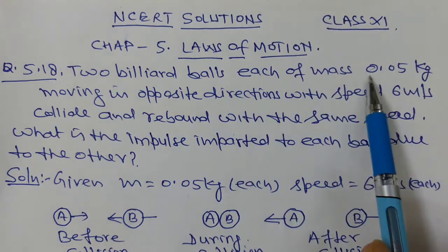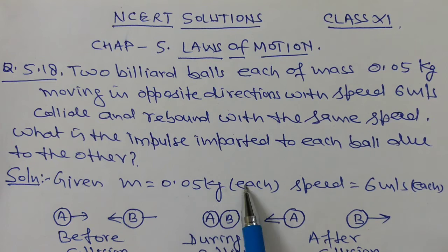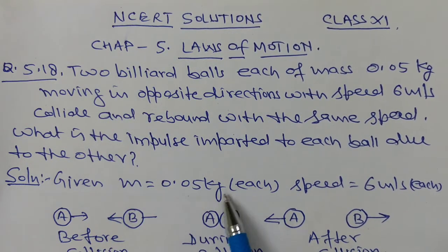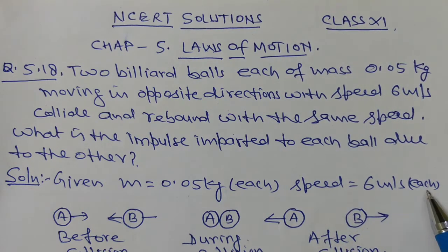We have given the mass of each ball is 0.05, M equals 0.05 kg each. Two balls are 0.05 kg and the speed of each ball is 6 m per second.